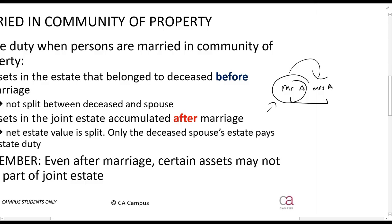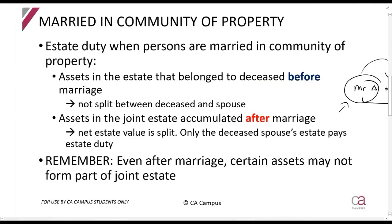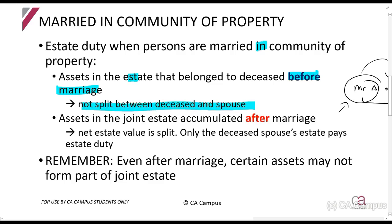There's a process we have to follow. If there are any assets in the estate that belonged to the deceased person before the marriage — that is, before entering the community of property — those are not split between the deceased and the spouse. For example, if Mr. A had a house before he got married to Mrs. A, that house is not in the joint estate. If it's not in the joint estate, that person alone gets taxed on it; if it is in the joint estate, it is split.